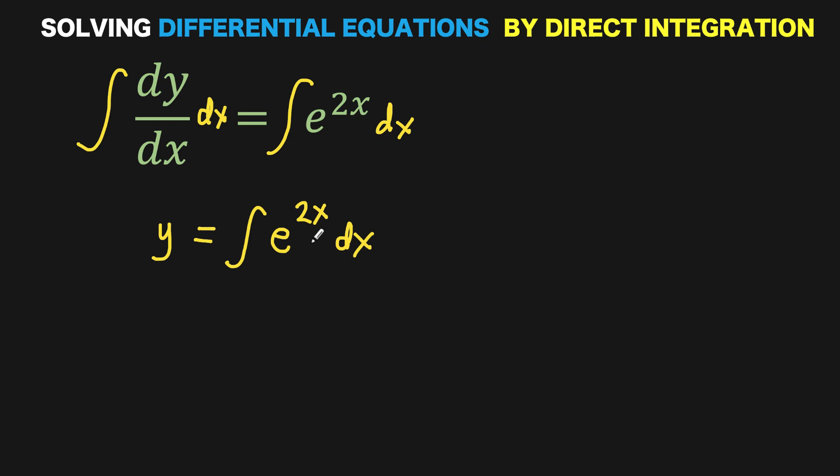Notice that our exponent here is another function. The outer function is e raised to that exponent, the inner function is the exponent 2x. When we have an integration problem like this, we can solve this by u-substitution. So we now let u equal the exponent 2x.